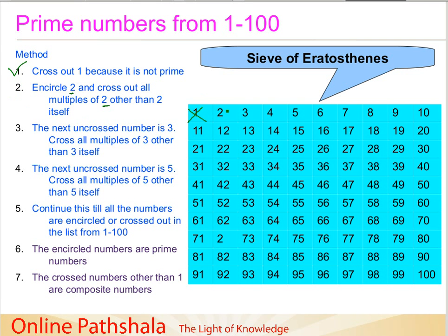We are encircling the number 2 here, and then I want to cross out all the multiples of 2 other than 2 itself. So straightforward: 2 multiplied by 2 is 4, I can cancel this. Then we have 6, 8, and 10. Now if I stop here and reflect for a moment.